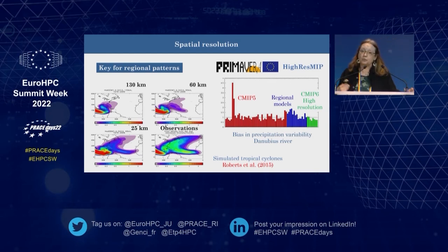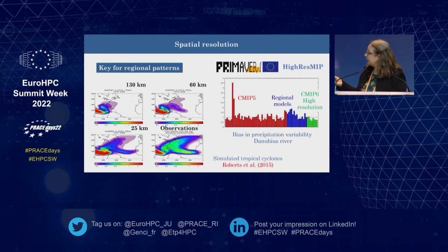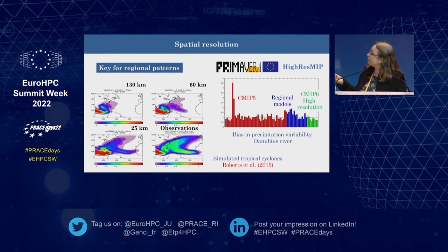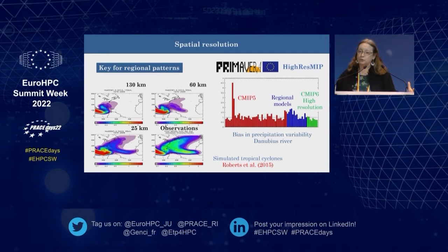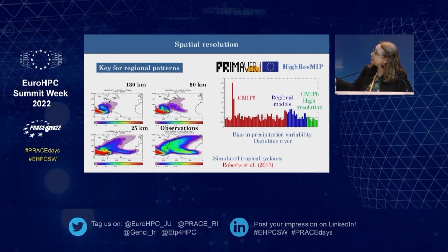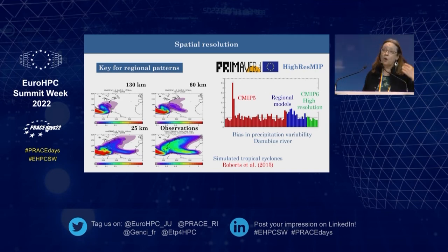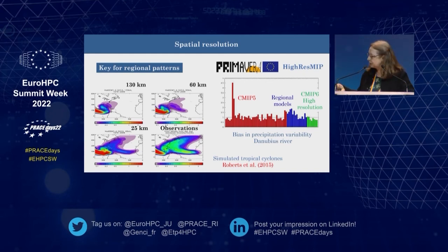We also need to reproduce river and precipitation variability for impacts. Here is the bias in precipitation variability in the Danube region: with CMIP5, the previous generation where the highest resolution was around 100 kilometers, you see large error bars in the models. Often we also do a regional focus with regional models. CMIP6 with higher resolution is still biased, still not perfect, but somewhat better for the regional scale, giving hope that higher resolution will improve local-scale simulation.